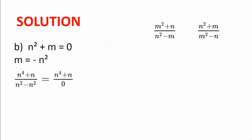We will now move on to when n² + m = 0, meaning m = -n². But substituting into the first fraction gives n⁴ + n divided by n² - n², which simplifies to (n⁴ + n) / 0. Since we cannot divide by zero, there are no solutions in this case either.